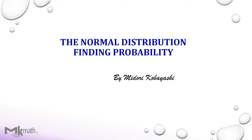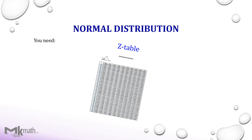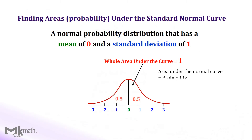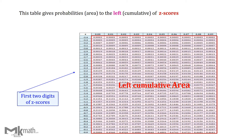In this video, I'll show how to use the z-table to find probabilities. You need a cumulative z-table. The standard normal distribution has a mean of 0 and a standard deviation of 1. Keep in mind that the area under the curve is probability. This z-table gives the area or probability to the left of z-scores. The first column shows the first two digits of z-scores and the top row shows the second decimal place of z-scores.